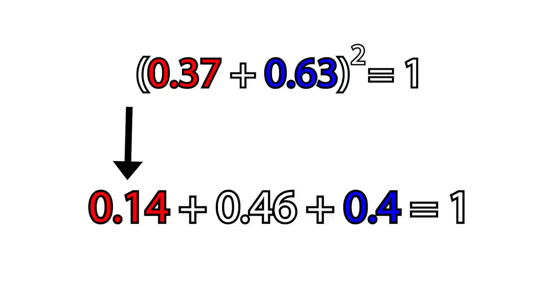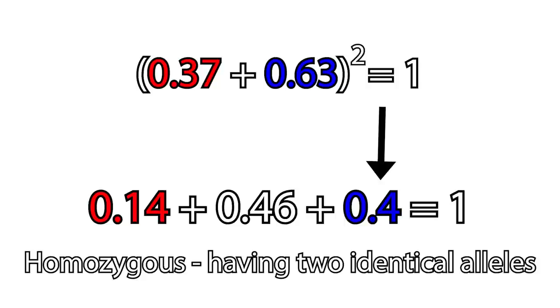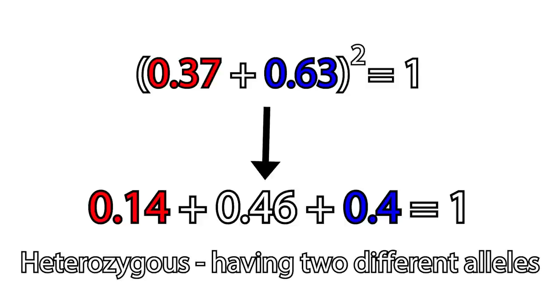And there you have it. 14% of the population is homozygous dominant. They have two dominant red alleles. 40% of the population is homozygous recessive. They have two recessive blue alleles. And 46% of the population is heterozygous. They have one red allele and one blue allele, so they still look red. We just use logic and algebra to calculate the DNA of an entire population. How flippin' cool is that?